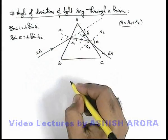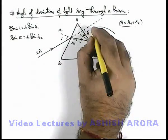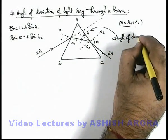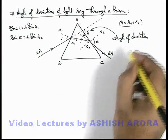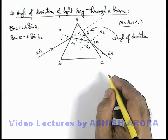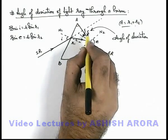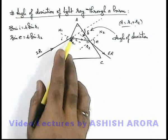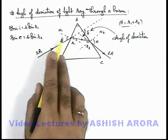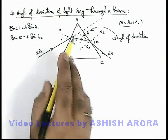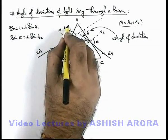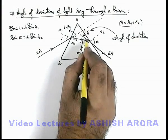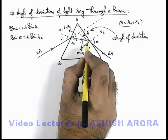This angle we define as delta — the angle of deviation of light refracted through the prism. We can easily calculate the value of this deviation angle: as an exterior angle, it must equal the sum of the two interior angles of the triangle formed. So if the angle of incidence is i and the first refracting angle is r1, this angle is i minus r1. And this angle we write as e minus r2, because the total angle at the second surface is e and the internal angle is r2.